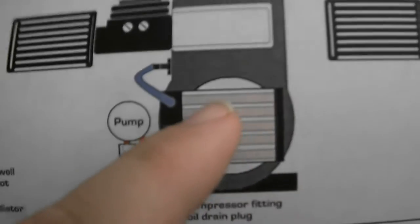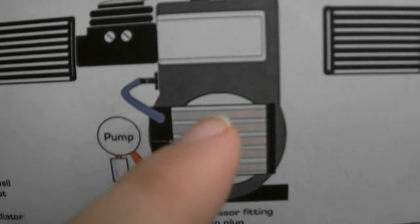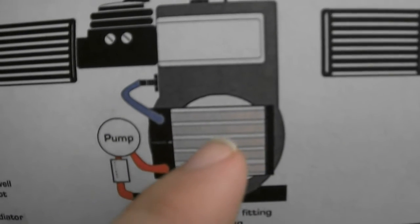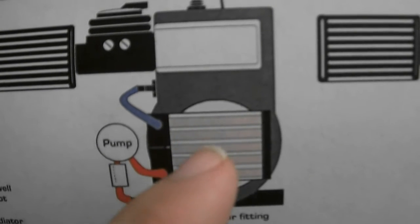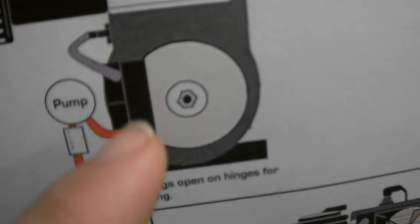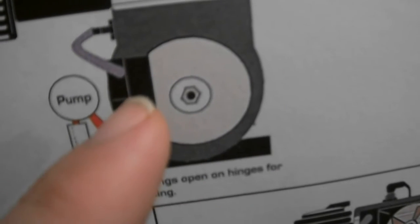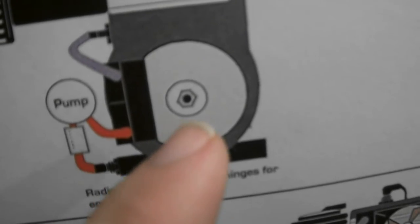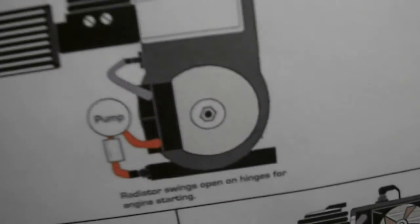with this setup is that you couldn't get to the pull starter - not this way. You couldn't start the engine unless you got the radiator out of the way. So the idea was to put it on a door hinge or something, have it open and close, and then use electric start.